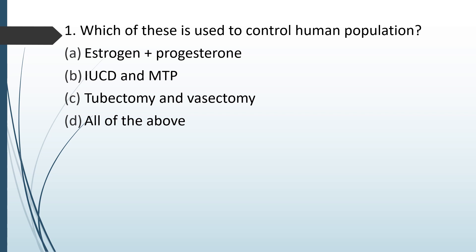The correct answer is option D, all of the above. Estrogen and progesterone is the combined contraceptive pill used by females so that her cycles can be controlled and ovulation can be prevented. IUCD stands for intrauterine copper devices — a method of contraception. MTP is medical termination of pregnancy, in which if pregnancy is unwanted, it is terminated. Both are used to control human population. Tubectomy is cutting of tubes in females; vasectomy is cutting of vas deferens in males — both are surgical methods of sterilization.